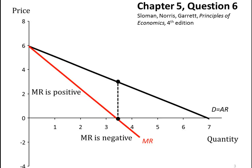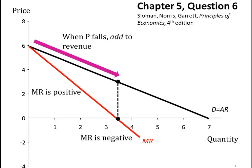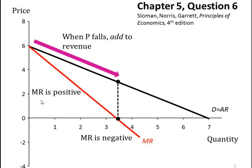Over this top range of the demand or average revenue curve, as price falls you will be adding to total revenue. How do we know? Because marginal revenue — the additional revenue from each unit sold — is positive as we move down the average revenue curve. Positive marginal revenue means you must be adding to your total revenue.